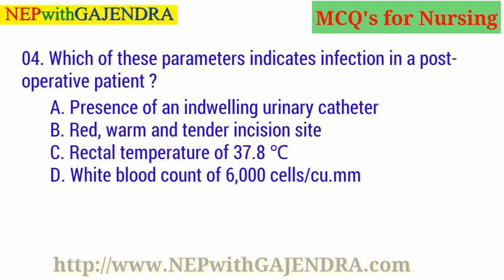Which of these parameters indicates infection in a post-operative patient? A. Presence of an indwelling urinary catheter. B. Red, warm and tender incision site. C. Rectal temperature of 37.8 degrees Celsius. D. White blood count of 6000 cells per cubic mm. The right answer is B: Red, warm and tender incision site.